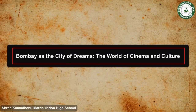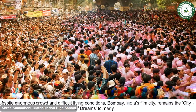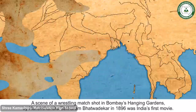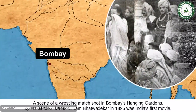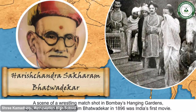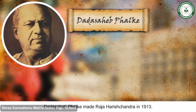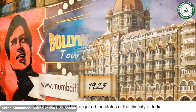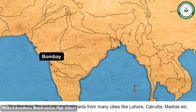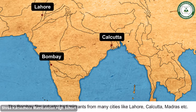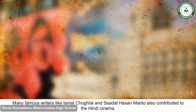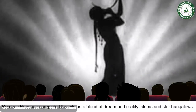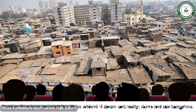Bombay as the City of Dreams — Cinema and Culture: Despite enormous crowds and difficult living conditions, Bombay, India's film city, remains the city of dreams to many. A scene of a wrestling match shot in Bombay's Hanging Gardens by Harish Chandra Sakharam Bhattwadekar in 1896 was India's first movie. Dada Sahib Phalke made Raja Harishchandra in 1913. By 1925, Bombay had acquired the status of the film city of India, attracting migrants from cities like Lahore, Calcutta and Madras. Famous writers like Ismat Chughtai and Saadat Hassan Manto also contributed to Hindi cinema. Bombay films have projected the city as a blend of dream and reality — slums and star bungalows.